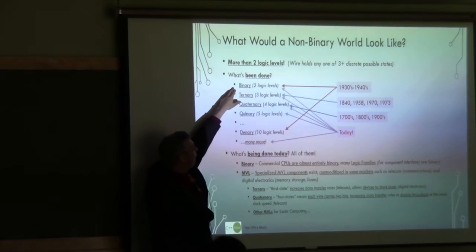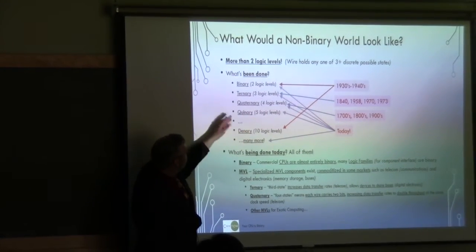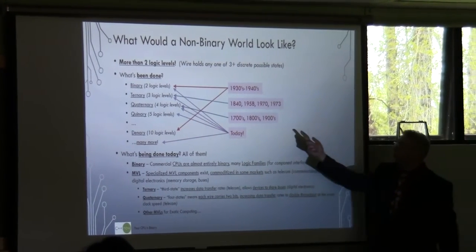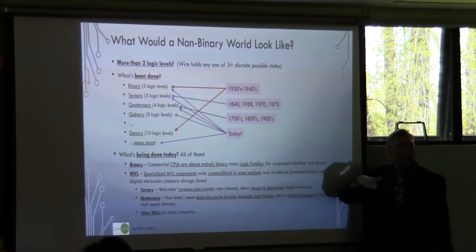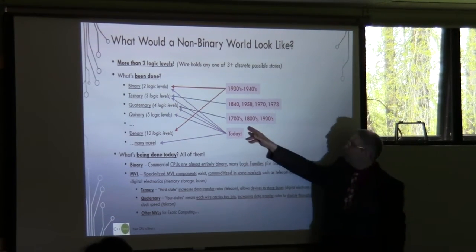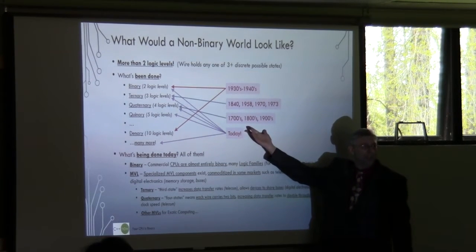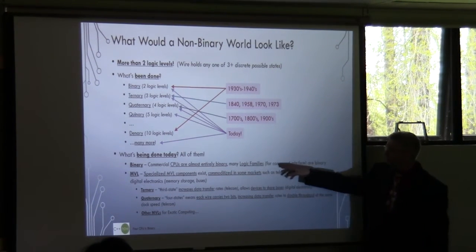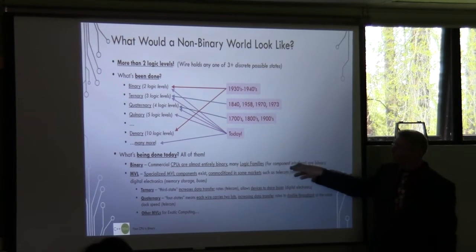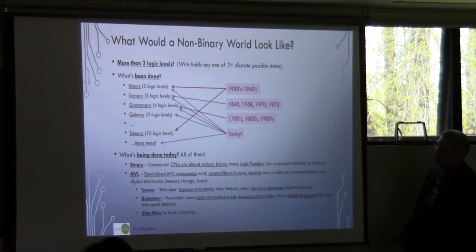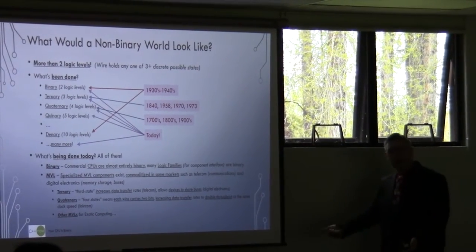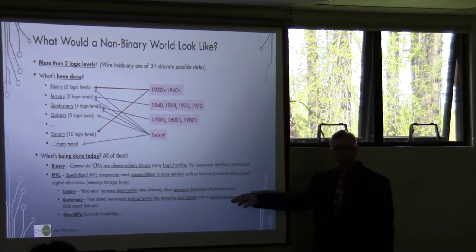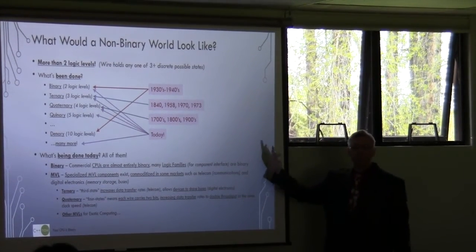This is nothing new. We've been doing binary for a long time, mostly 30s, 40s, and on. But there was a lot of flirtation with ternary. Quaternary — two bits on the line — and telegraph stuff, that's been there forever. They did some playing with base 10. The commercial CPUs are all binary today, and the logic families are binary too. MVL is commoditized in vertical markets: telecom, memory, and some specialized stuff.